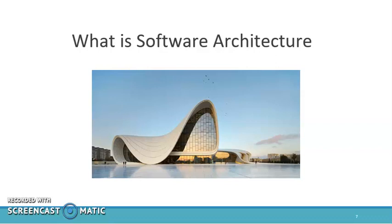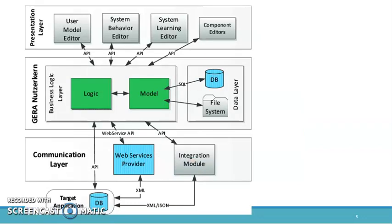The software architecture is also like building and designing different components of the system. If we look at this image we can see this is a software architecture view. In this image we can see different boxes or different elements and components. These components are working together and they have relationships with each other. So if we decompose the whole system into different components and subsystems, we can build software architecture.